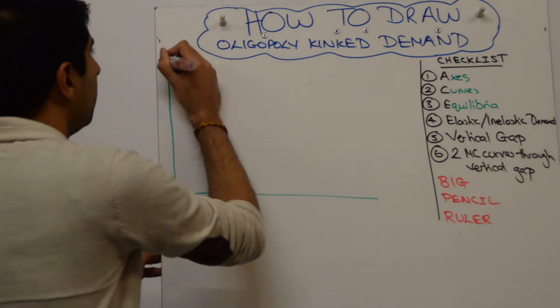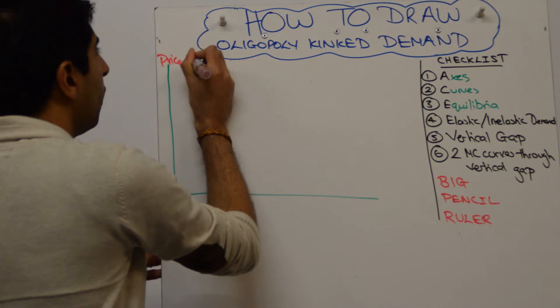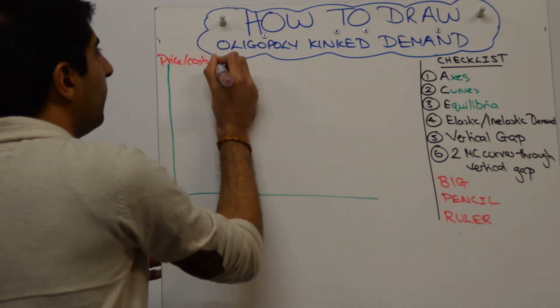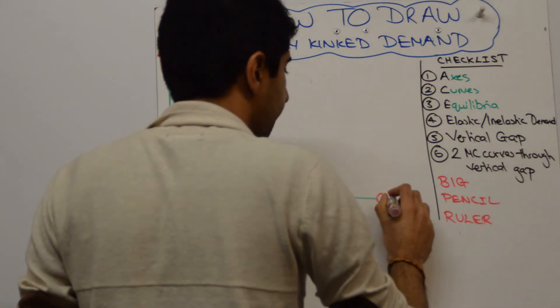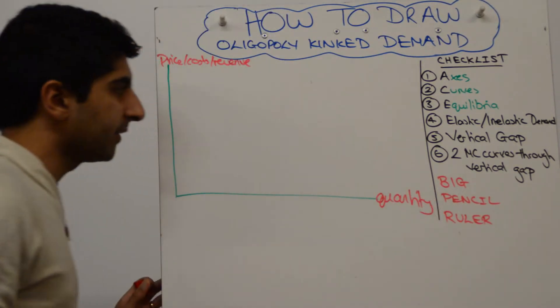Let's get going with the construction. We have price, costs and revenue on the y-axis and we have quantity on the x-axis.